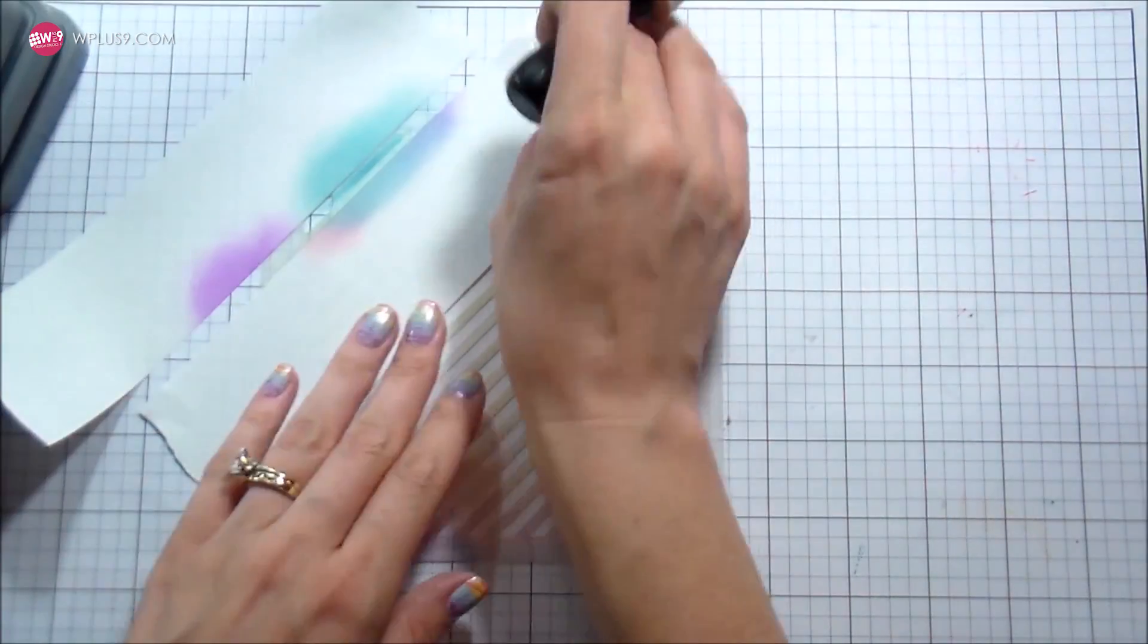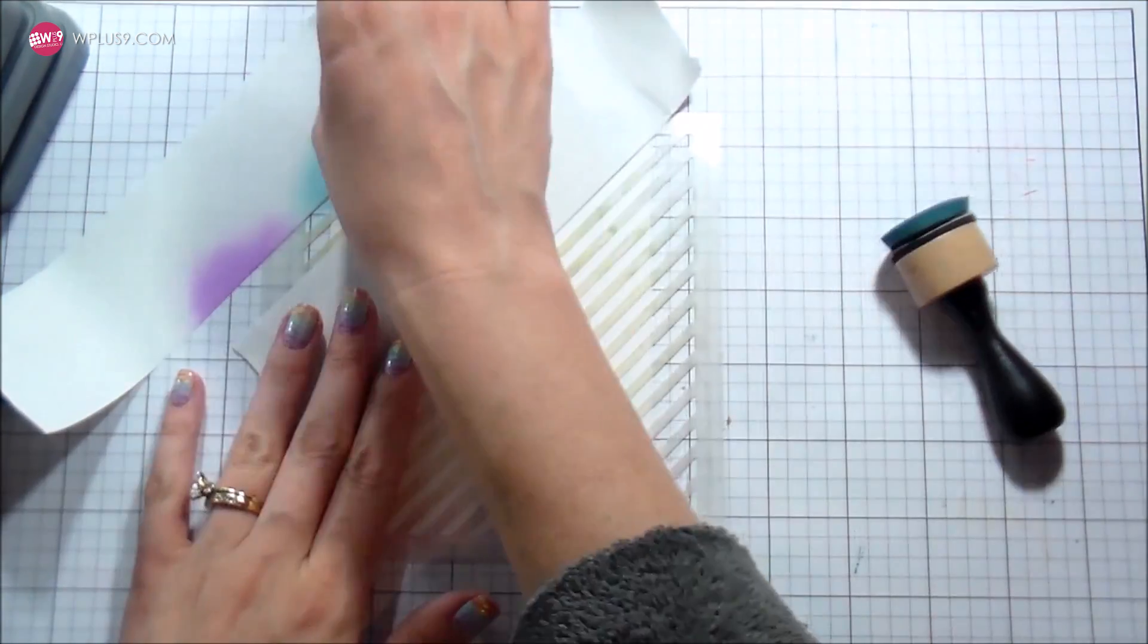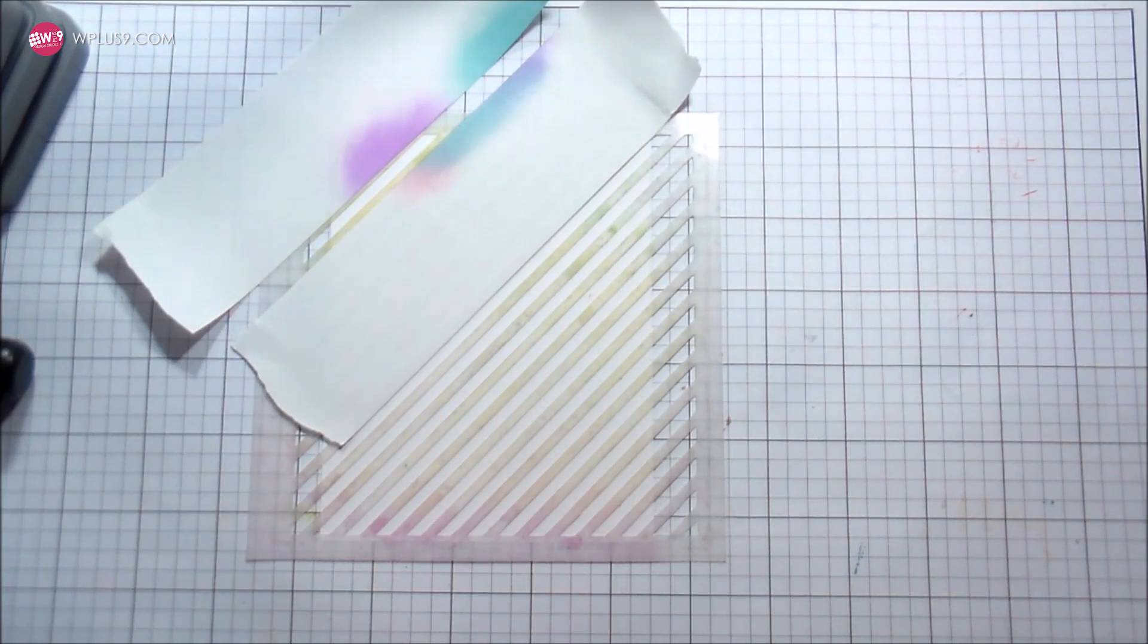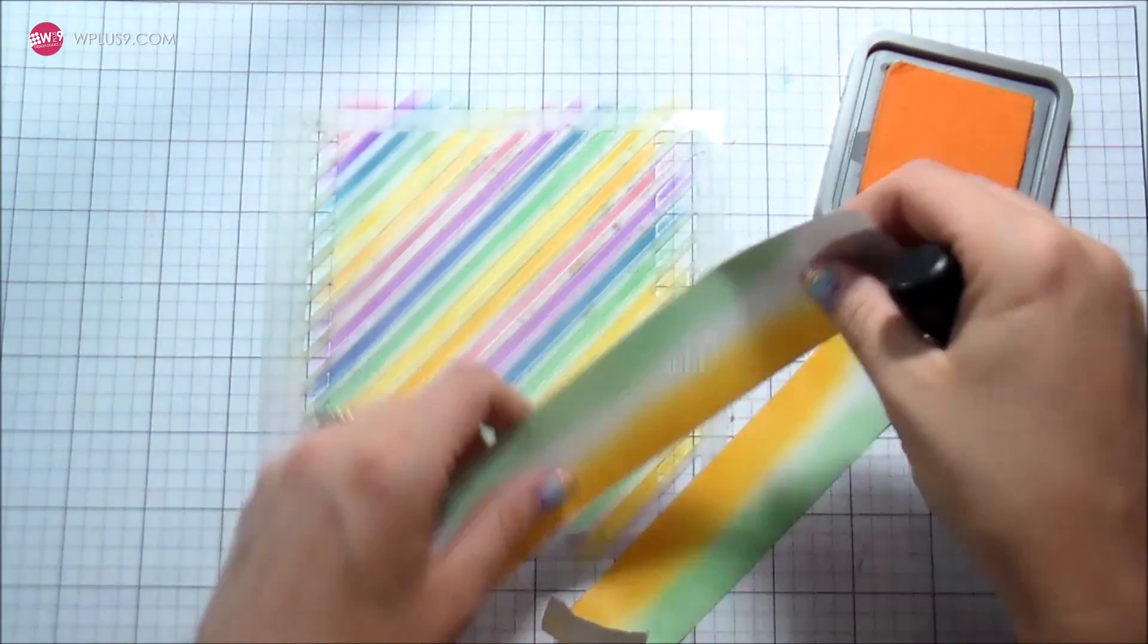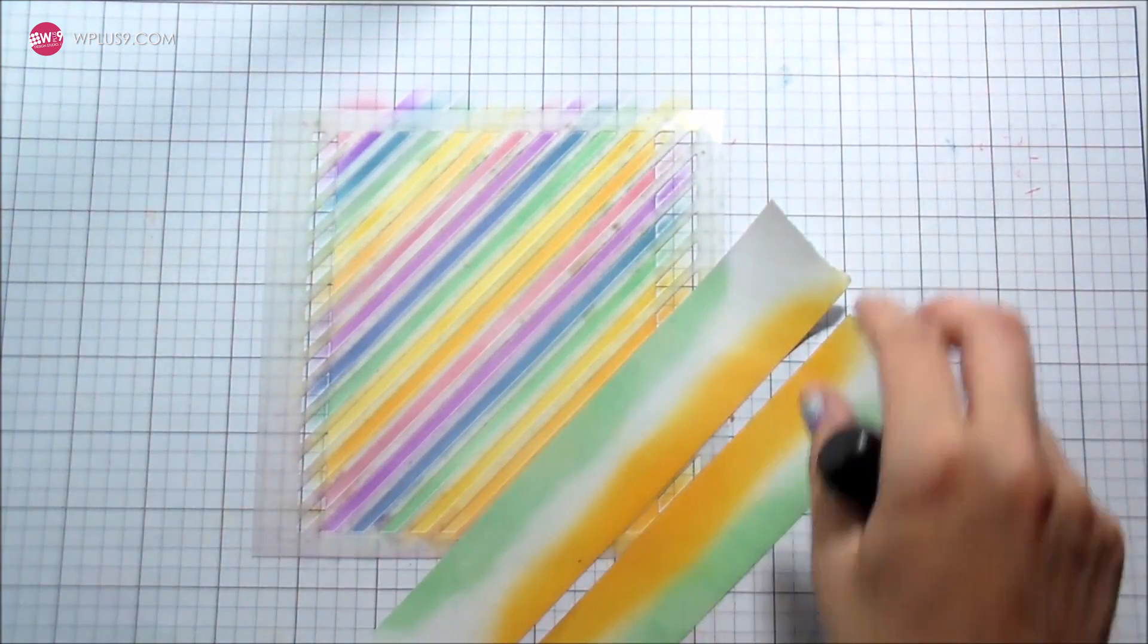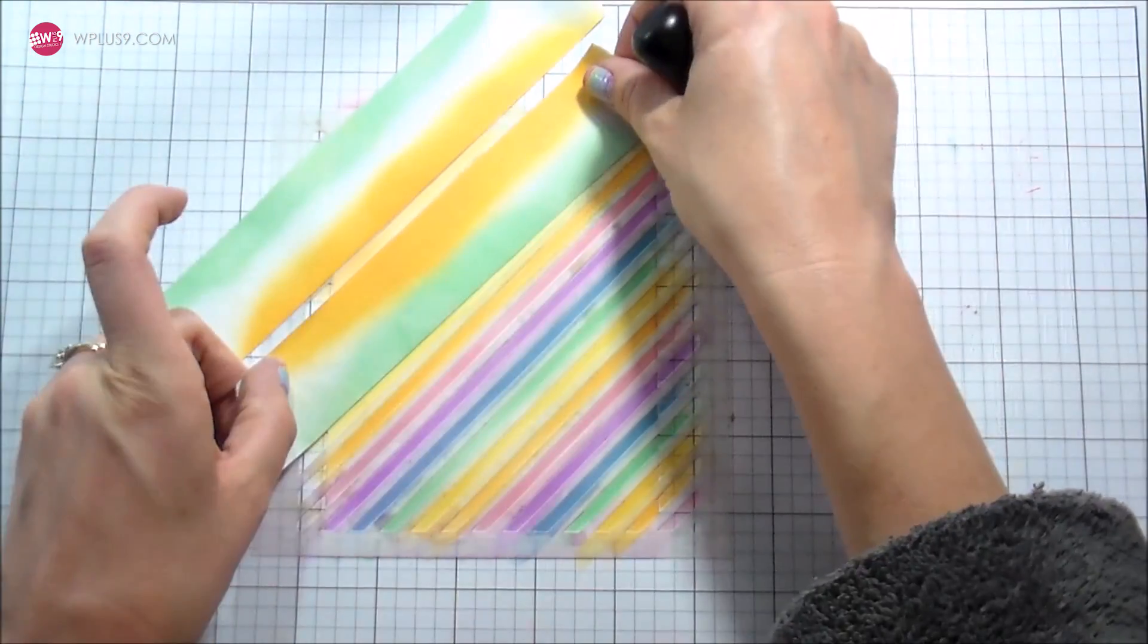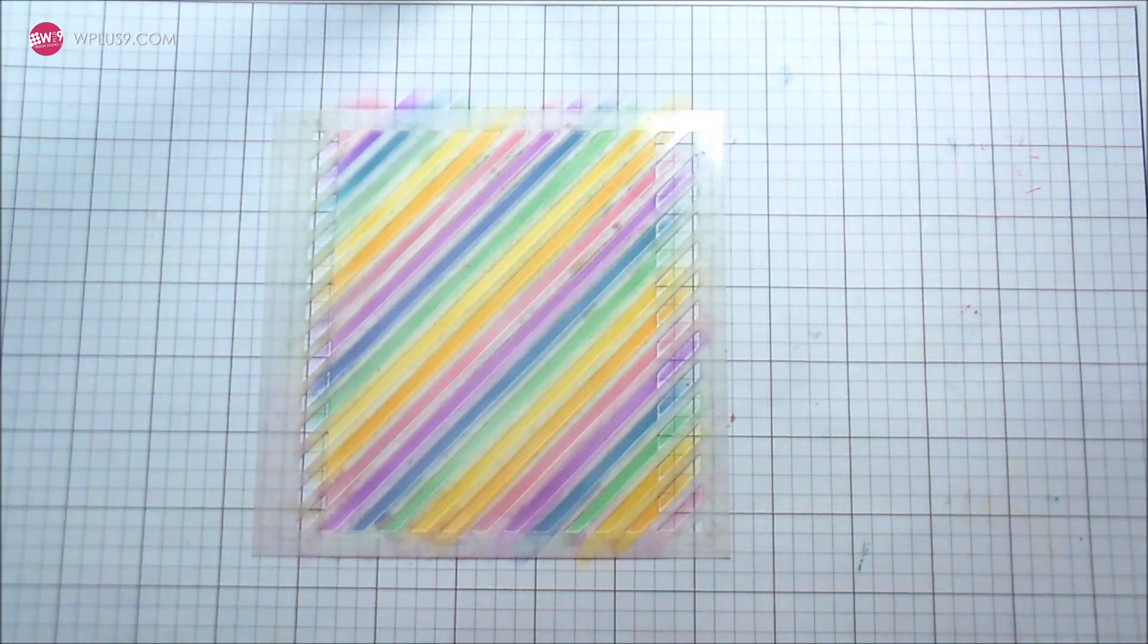One of the problems I've had in the past doing this with regular distress inks, and it does the same thing with distress oxides, is when you're using the same mask over and over again it picks up the pigment from the mask, so you don't have a true color unless you change them up, which I definitely did especially for the yellows. I went back to the first one because I just didn't feel like the intensity matched.